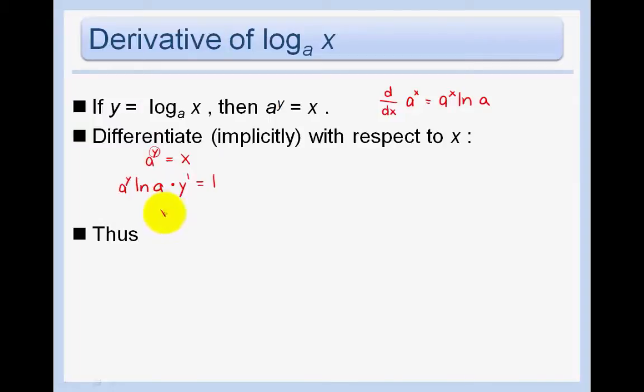So if we want to solve for y prime, we get 1 over a to the y ln a. And if we look back at what we started with, we let a to the y equal x. So we can replace this a to the y with an x.